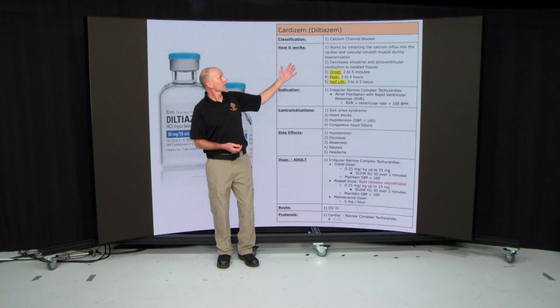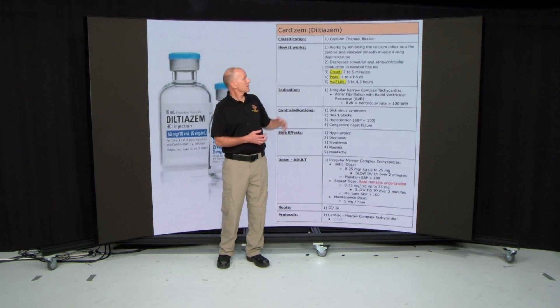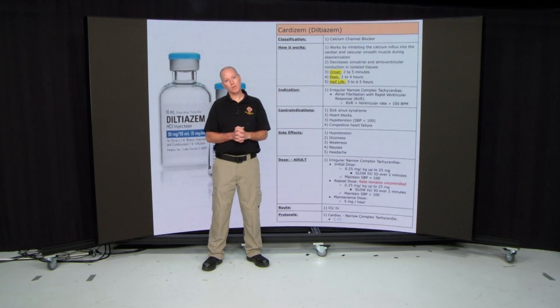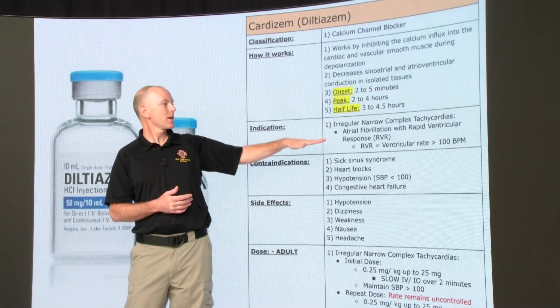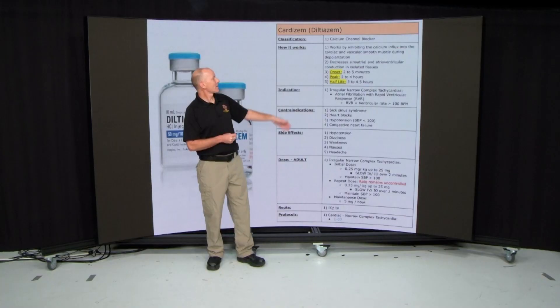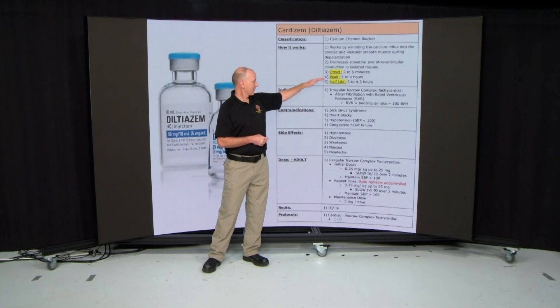So how does it work? It inhibits calcium influx in the cardiovascular and the vascular smooth muscle during depolarization. This is what's going to hopefully stop that afib with RVR. The nice thing about Cardizem is the onset is two to five minutes.